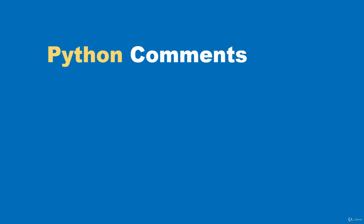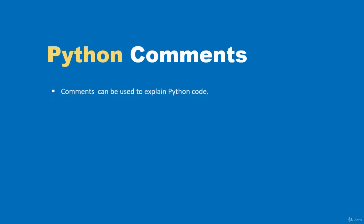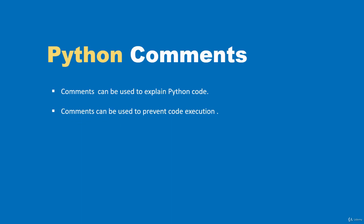Python comments can be very useful. They can be used to explain your Python code to yourself and to others. Comments can also be used to prevent execution of code when testing — if there are aspects of your code you don't want to run, you can comment them out. There are two main types of comments in Python: single-line comments and multi-line comments.